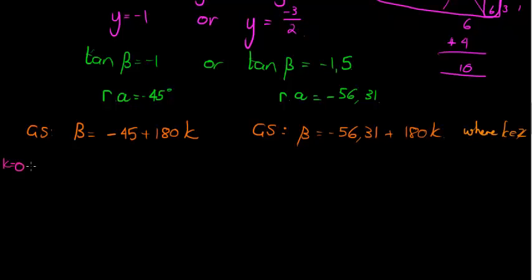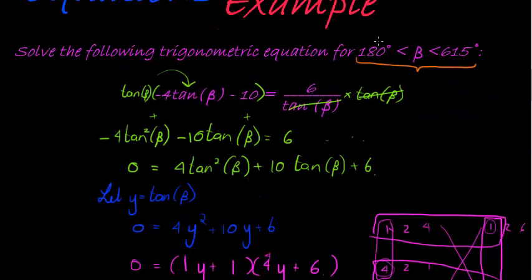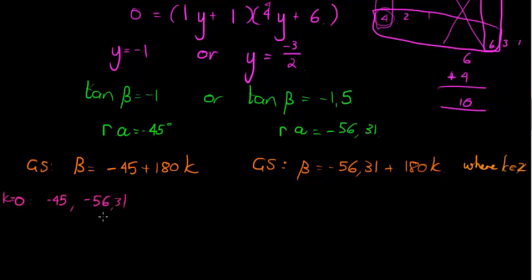If k is equal to 0, we find that in this case, negative 45, that gives me negative 45, and for this solution gives me negative 56.31. And these two are smaller than 180, so they fall outside of my interval. I don't consider either one of them. That also means that if I go k is equal to negative 1, I'm going to be subtracting 180 as well. That's also way too small.